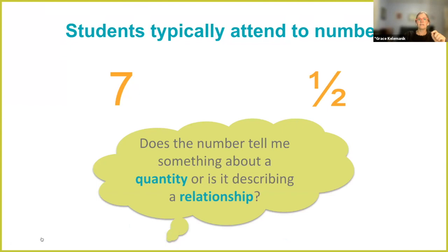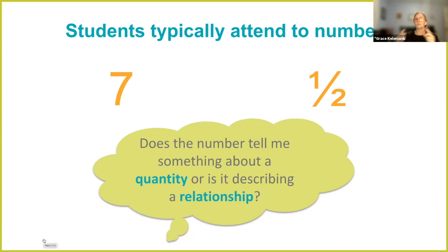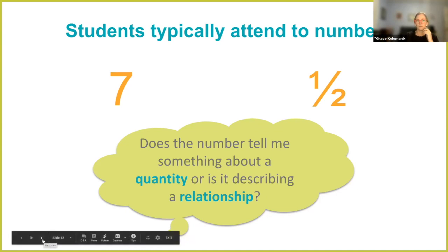That is, is this number telling me how much of something I have — is it a value for a quantity — or is this number comparing two things, describing a relationship? Because in math, numbers have two jobs: they either tell you how much of something you have, or they compare things. So if kids see numbers, that's fine, but we want them to habitualize asking themselves this question and determine the importance of that number — interpret that number in terms of the work it's doing in the problem.